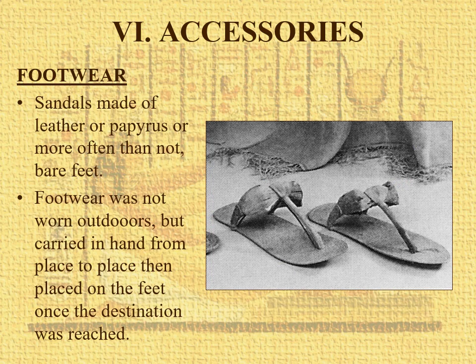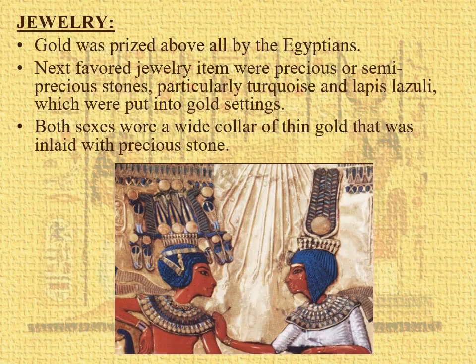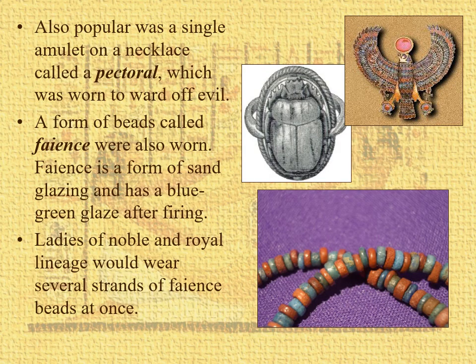Some accessories: simple leather sandals, but mostly bare feet. Footwear like sandals were not worn outdoors, but carried in hand from place to place — because your feet are dirty, you'd put them on once you got inside your destination. Jewelry: gold, precious and semi-precious stones, lapis lazuli. We have this wide collar of thin gold inlaid with precious stone — also called a pectoral. Also, this form of beads using a technique called faience, which is a type of sand glazing that usually has a blue-green glaze after firing.